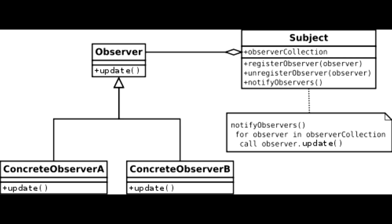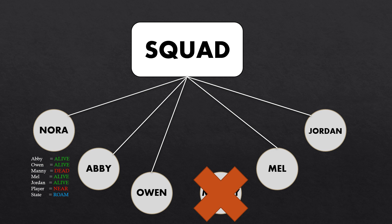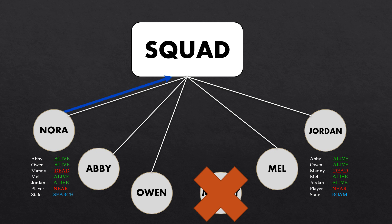The observer pattern is a design pattern where a subject — our squad in this case — has a list of observers, our squad members, and updates them whenever there is a change. So let's imagine that Manny dies, cutting him off from the squad, and then Nora finds him. Nora first updates her list by remembering that Manny is dead and that the player must be nearby. The other squad members have no idea of this, but Nora passes this information onto the squad class, which communicates it to the rest of the squad members, who then update their own lists. I also use this design to have squad members send orders to each other, so Nora could go into search mode and tell the rest of the squad to do the same.